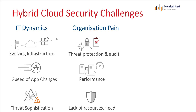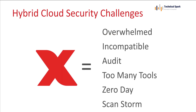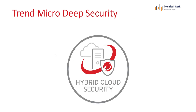Deep Security comes into the picture here. Deep Security is supported for all these various environments — the Deep Security agent can provide protection to all applications as well as server infrastructure. The answer to lack of resources is also the same: one agent serves the purpose of all your pain points. Trend Micro Deep Security will solve all your problems with a single solution. Major pain points like overwhelming incompatible audits, too many tools, zero-day threats, and scan storms — with Trend Micro, you don't have to worry about any of these.